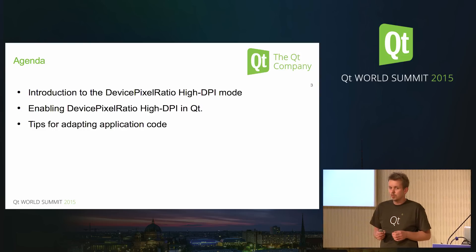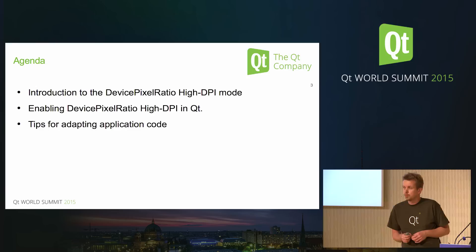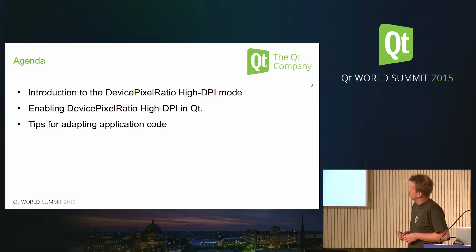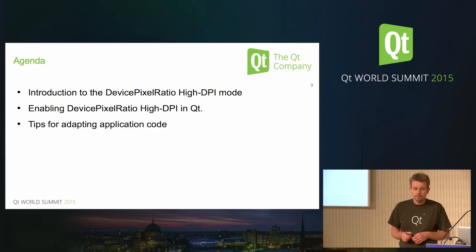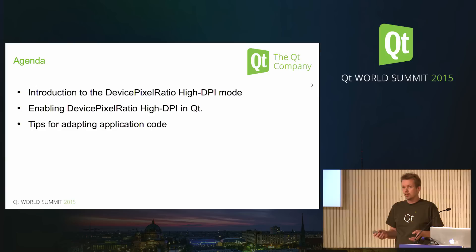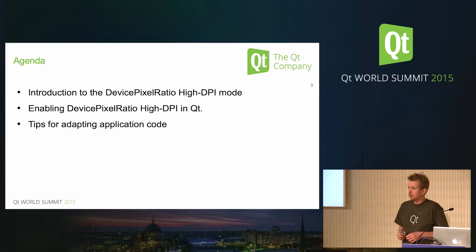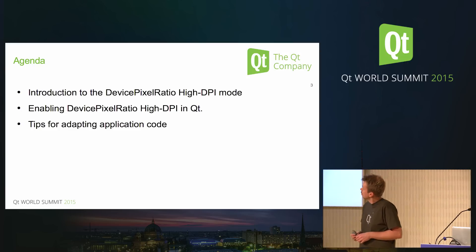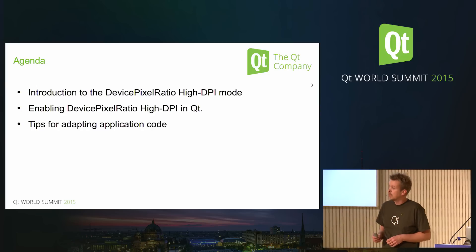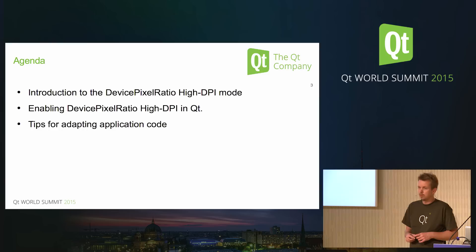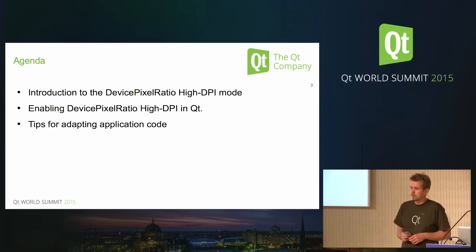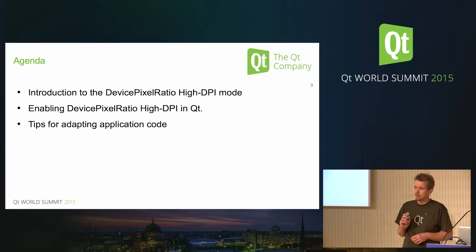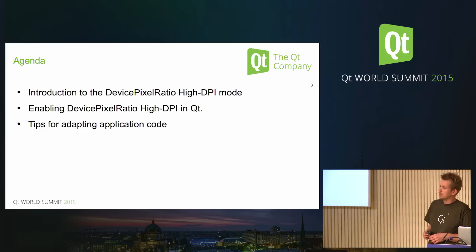I'm going to be talking about a special mode of high DPI support which we call the device pixel ratio high DPI mode. I'll start out by giving an introduction to the mode, explaining how it works, talk a bit about how to enable it when using Qt, and finally give some tips for adapting application code for dealing with high DPI or high pixel density displays.